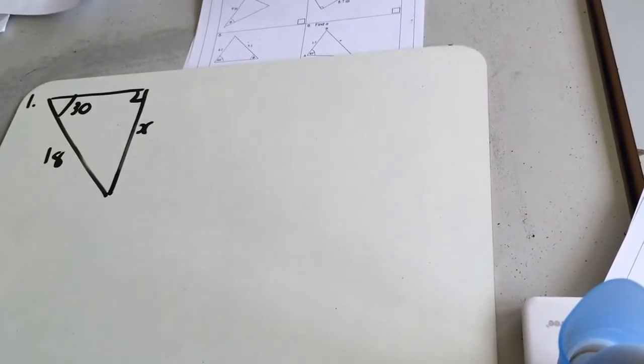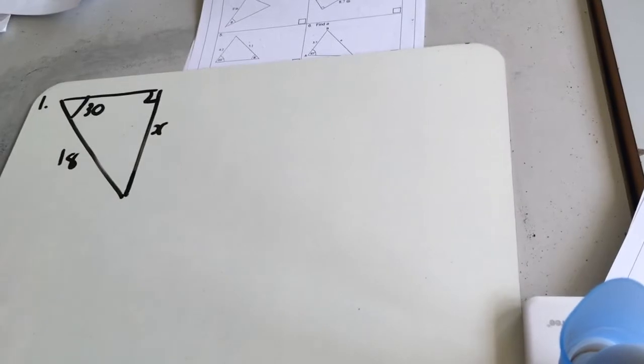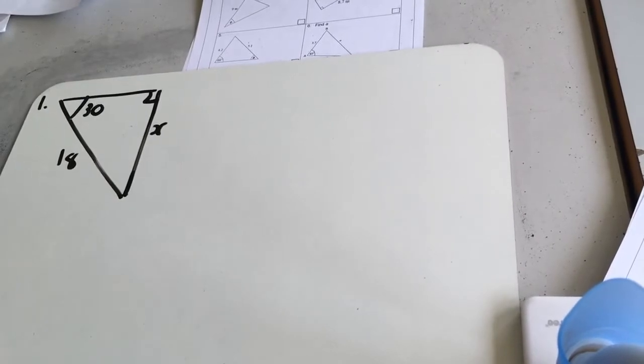Okay, exercise 5 which is on trigonometry. So we're just trying to find some unknown sides and unknown angles in some triangles. So we're going to be using a mix of SOHCAHTOA, Pythagoras, Sine Rule and Cosine Rule.